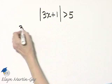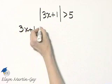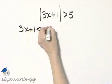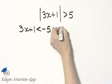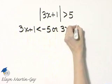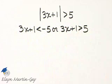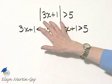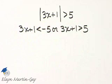either 3x plus 1 must be less than negative 5, or 3x plus 1 must be greater than 5 so that the absolute value is actually greater than 5.